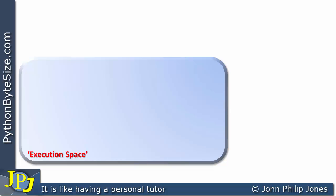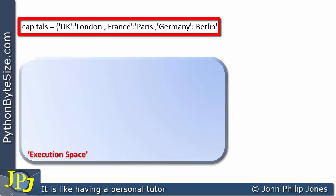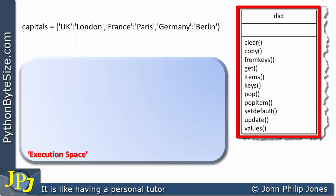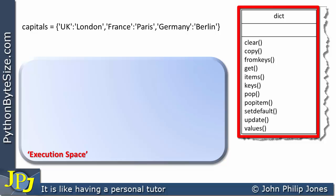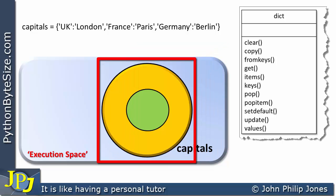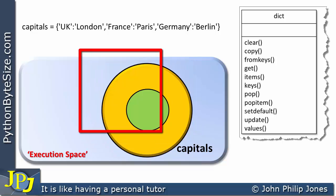When I look at object-orientated programs, I like to refer to something called the execution space. Within this execution space, we have objects, and these objects send each other messages. For the program we've been considering in this video, we will have seen this particular statement where 'capitals' is assigned, and here we have three key value pairs. This particular line will result in an object based on the dict class being produced. That's the dictionary class, and 'capitals' is bound to this particular object.